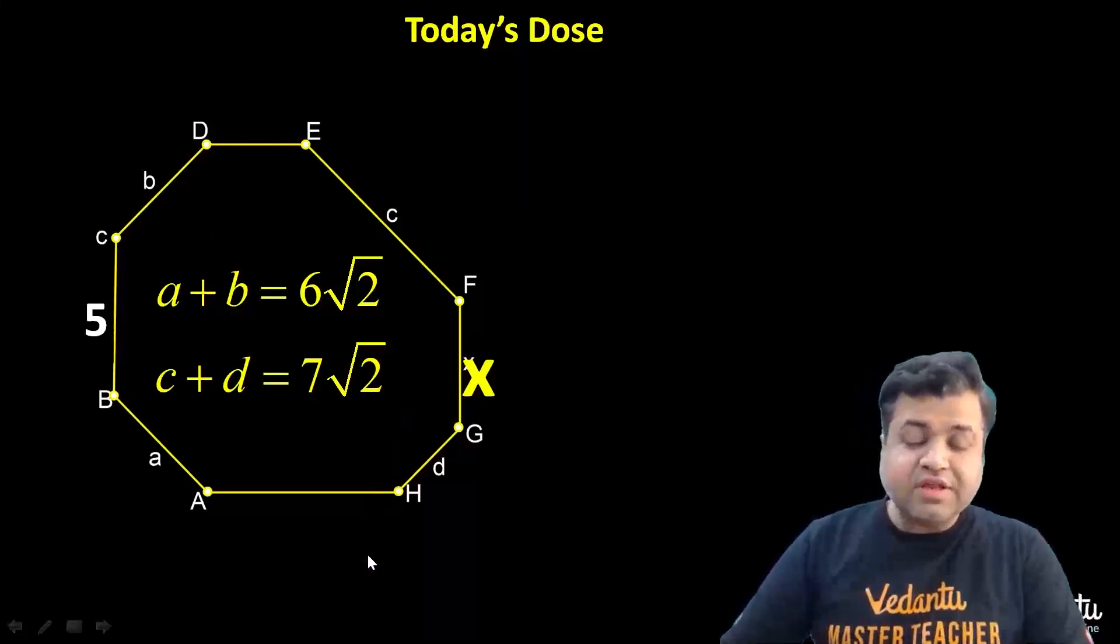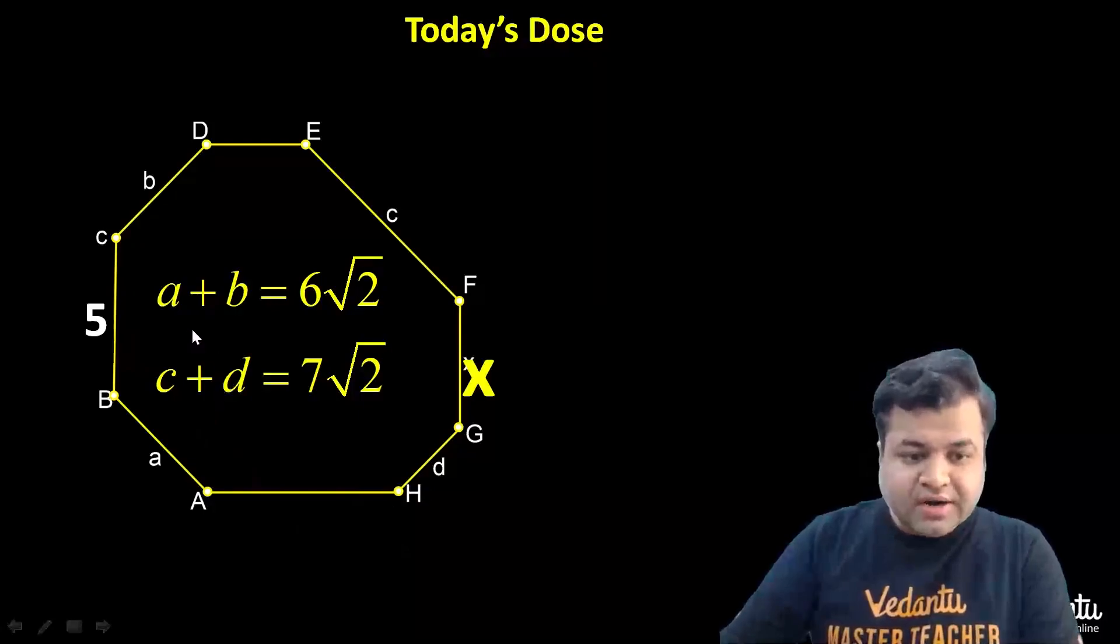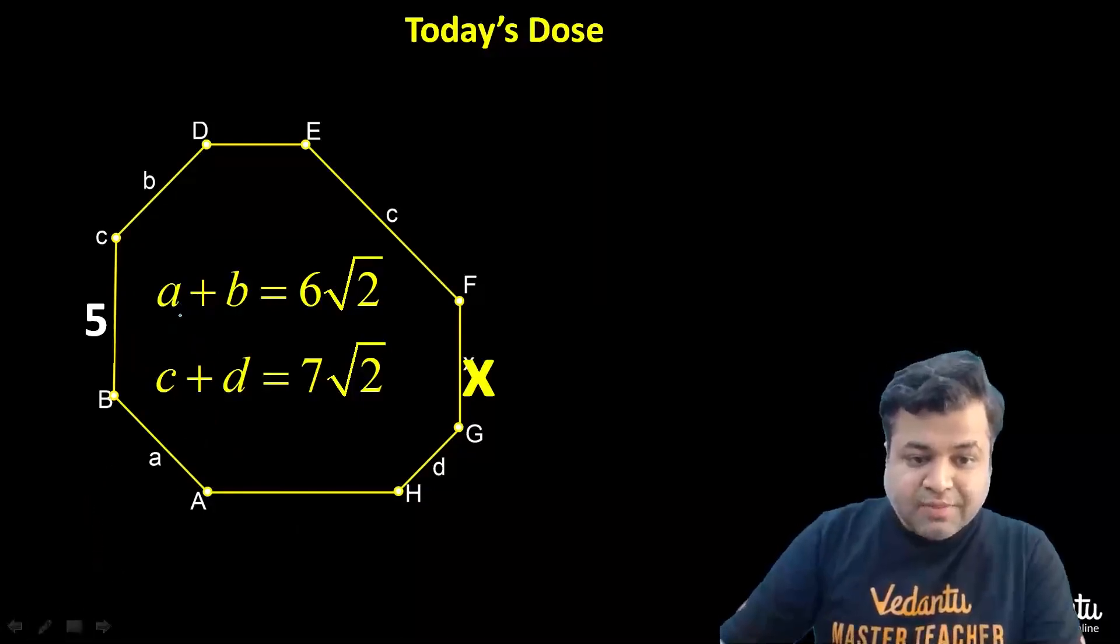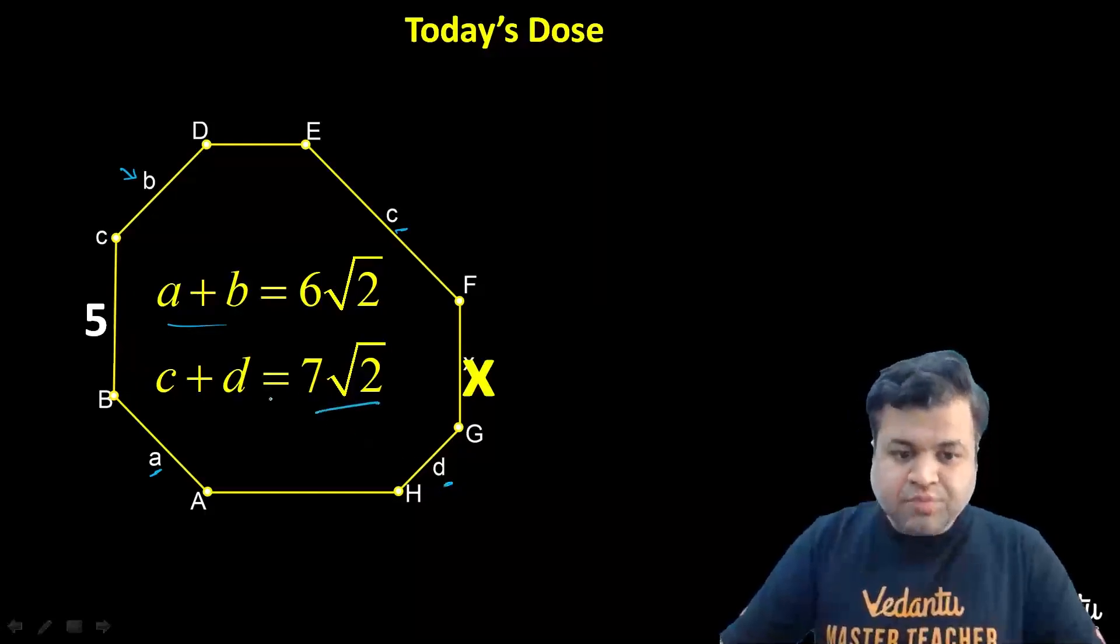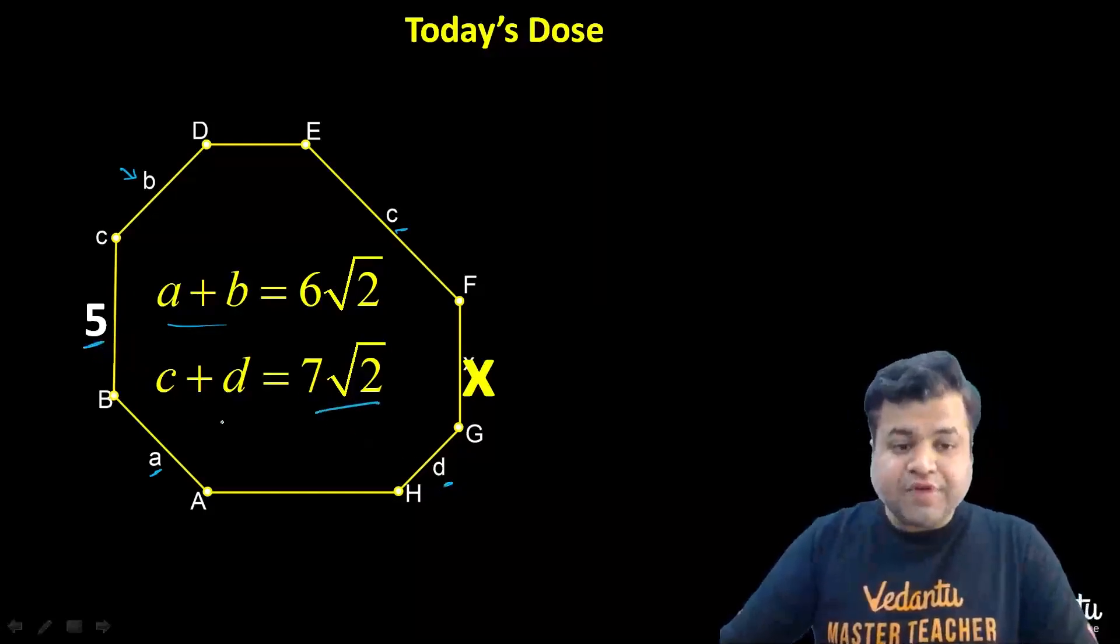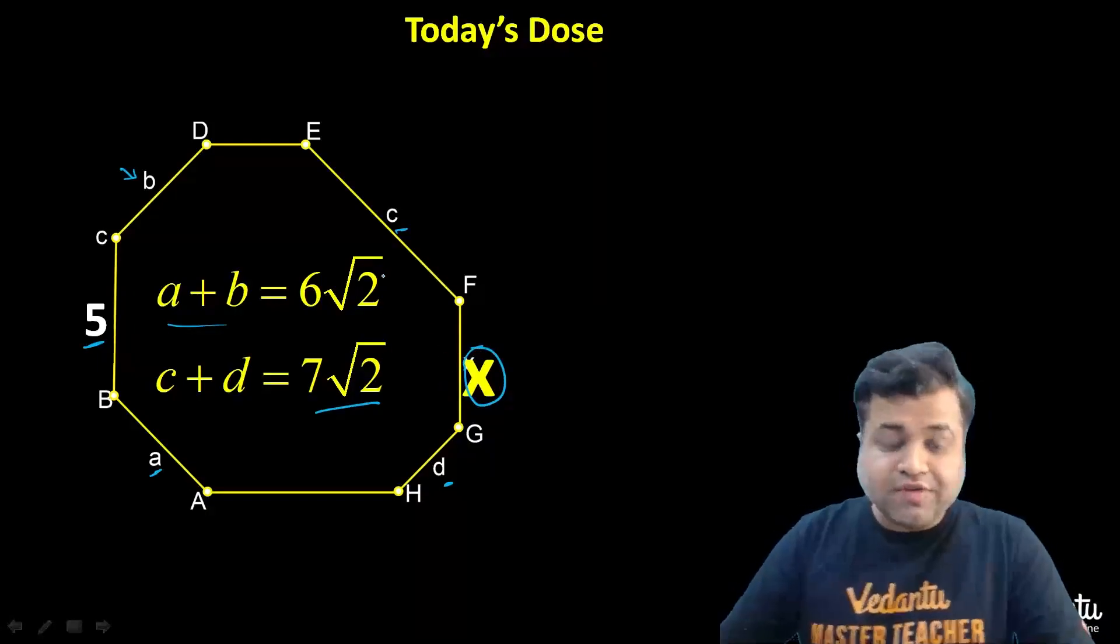The question: we are given an equiangular octagon as you can see, and there are some values we are given with, like a plus b that is given to be 6 root 2, c plus d is given to be 7 root 2. C side is given to be 5 units and we need to find this FG side. We need to find the value of x.